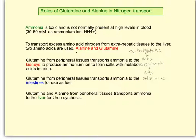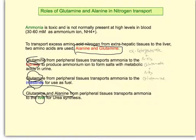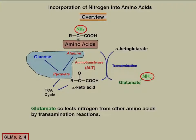Glutamine and alanine are both very neutral, so they don't affect the pH of the blood, making them very good carriers of amine groups through the serum. From peripheral tissue, glutamine can carry nitrogen to the kidneys, to the intestines, or both glutamine and alanine can carry it to the liver for the urea cycle.